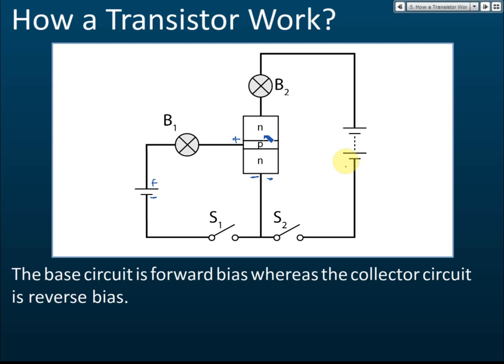In reverse bias, the negative terminal is connected to n-type — no problem there — but the positive terminal is also connected to the n-type semiconductor. So positive connected to n-type means this is reverse bias. So the base circuit is always forward bias and the collector circuit is always reverse bias. That is the connection of a transistor.